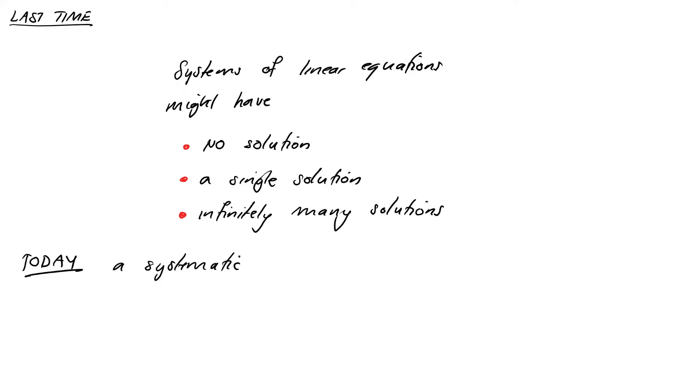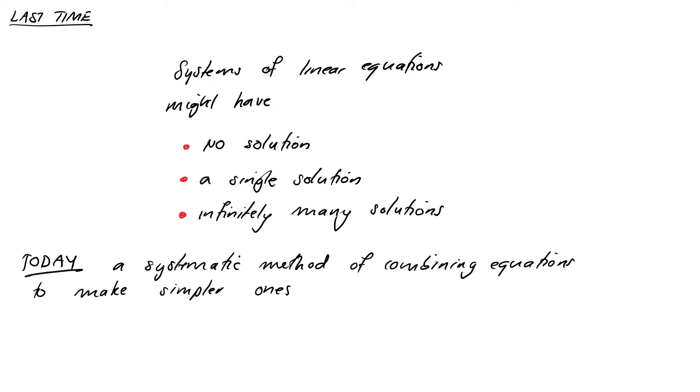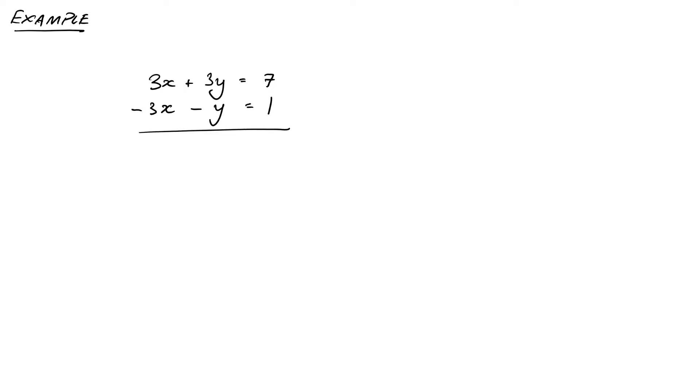What we're going to do in this video is develop a systematic way of combining equations together to make simpler ones. For example, if I have two equations 3x + 3y = 7 and -3x - y = 1, then if we add these two equations together, the new equation will have no x terms. So I'll get 3x - 3x is 0x, 3y - y is 2y, and 7 + 1 is 8 on the right-hand side. So we see that y = 4, and then we plug this back into our first equation to solve for x. This is the back substitution we did last video.